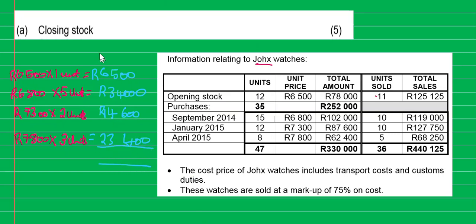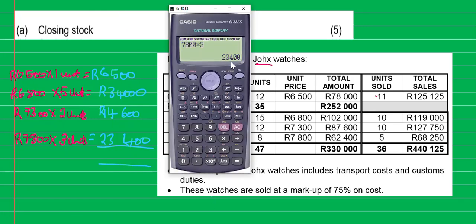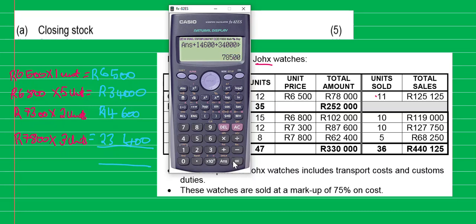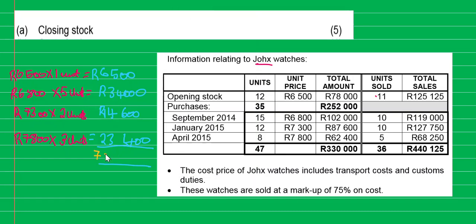Now if you add all these together, it must give you a total. Let's add: 23,400 plus 14,600, plus 34,000, plus 6,500 — that equals 78,500. So this is the amount we are looking for: 78,500.